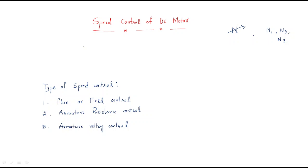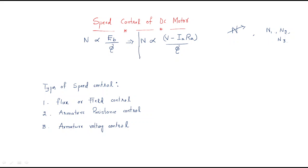To understand speed control, we have a key relation: speed is always proportional to the back EMF generated in the armature and inversely proportional to the flux. The back EMF is nothing but voltage minus armature drop, divided by the flux. By using this relationship we have a number of methods to control the speed of any DC motor.